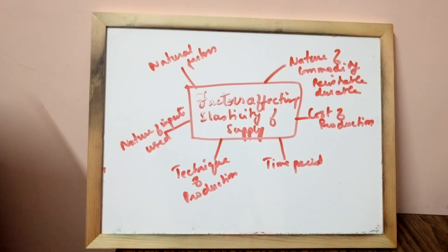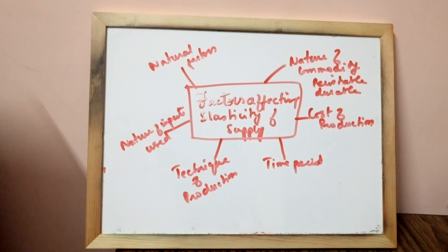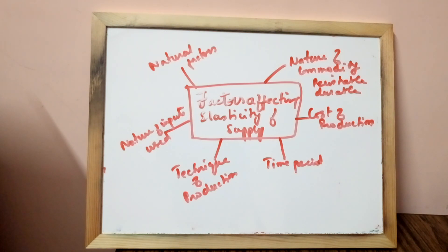The next one: time period. In the market period, supply of a commodity is perfectly inelastic as supply cannot be changed immediately with change in price. In the short period, supply is relatively less elastic as a firm can change the supply by changing the variable factors. In the long period, supply is more elastic as all factors of production can be changed and supply can be easily adjusted as per changes in price.